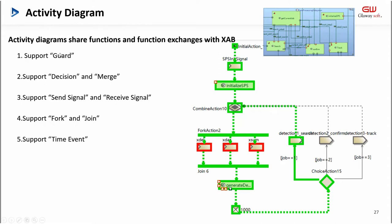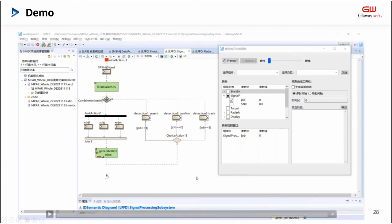As a newly added diagram, the activity chart will share function and functional exchange with XAB. As shown in the figure, the activity diagram comes from LAB in the upper right. Activity diagram supports the following elements: it supports guard, it supports decision and merge, it supports send signal and receive signal, it supports fork and join, and it supports time events.